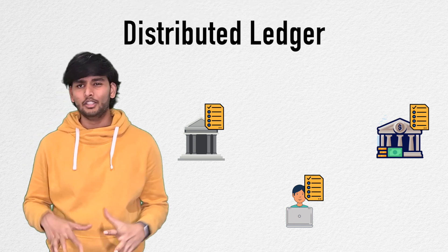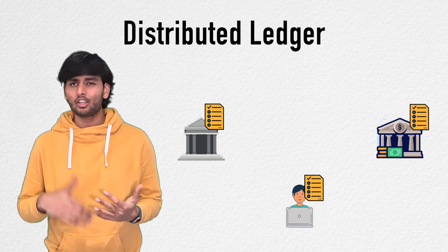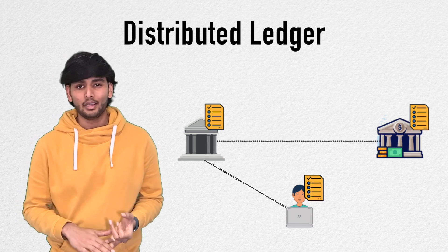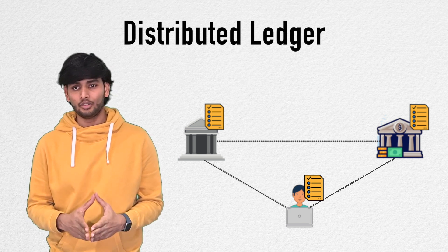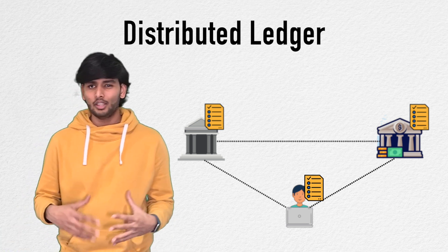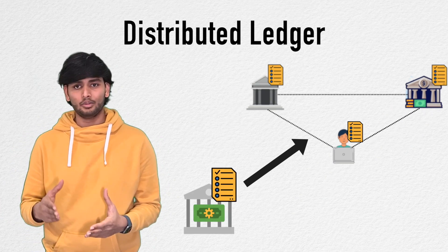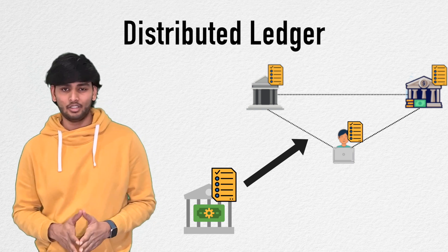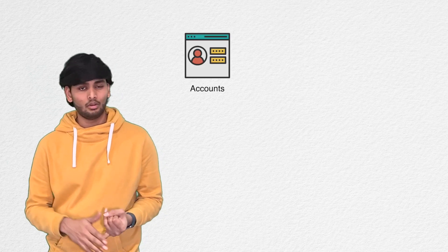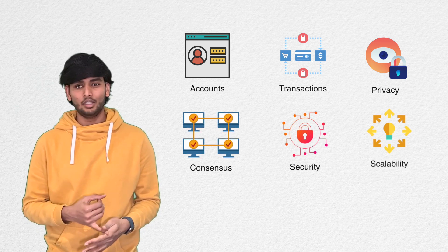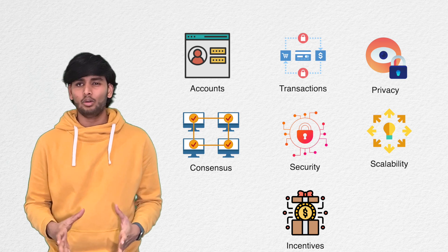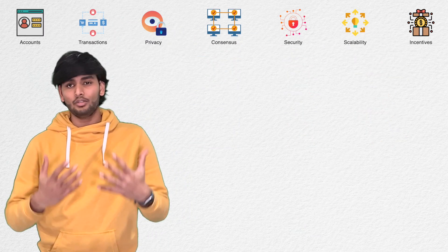You can alleviate most of these problems if you distribute the ledger among multiple entities and let anyone update it. This is called a distributed ledger. Distributed ledgers can be thought of as having a copy of the ledger replicated, maintained, and synchronized by multiple institutions or individuals. Blockchain is one way to implement a distributed ledger. Moving from a centralized to a distributed ledger requires a fundamentally different approach to features such as accounts, transactions, privacy, consensus, security, scalability, and incentives. Now let's look at how blockchain offers each of these features by design.